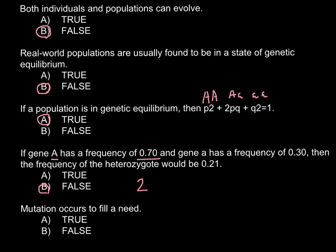So 0.7 multiplied by the frequency of small a, that is 0.3. So the answer here would be 0.42. So this is a false statement.